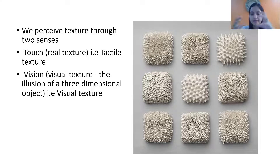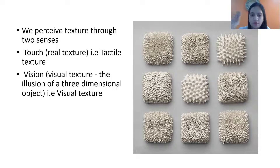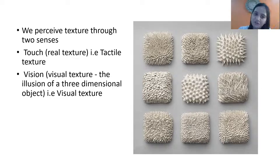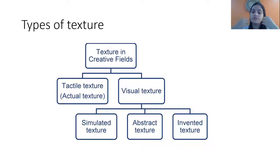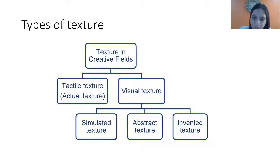If you are seeing any chipped wall surface, you can easily make out that this wall has a very scaly texture. So the two categories of texture are touch and vision. Tactile texture is what we can touch and feel; visual texture is what we can identify by seeing. We further subcategorize visual texture into three subcategories: simulated texture, abstract texture, and invented texture.